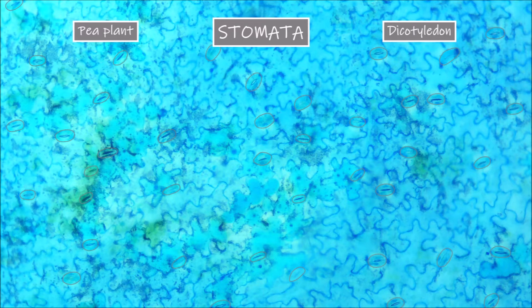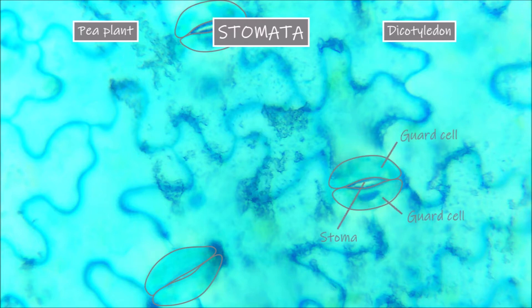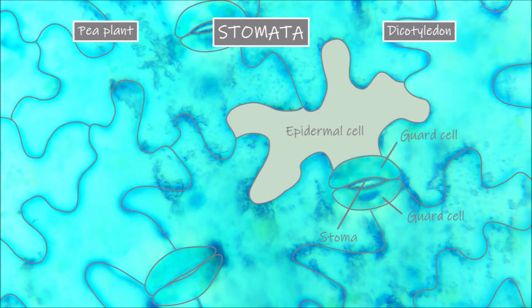These are where the stomata are, as you can see there are a lot of them. Now if we go to a higher magnification you can see them more clearly. What we are seeing mostly are the two guard cells that surround the stoma. The stoma is the pore found between these two guard cells. These two guard cells are what we call kidney shaped. We can also see that the stoma or pore between these two guard cells is open. In addition to the specialized guard cells and the stoma we can see the layer of irregular epidermal cells that cover the surface of the leaf.